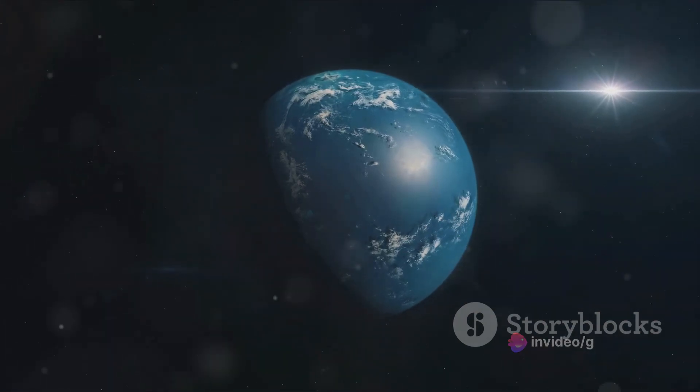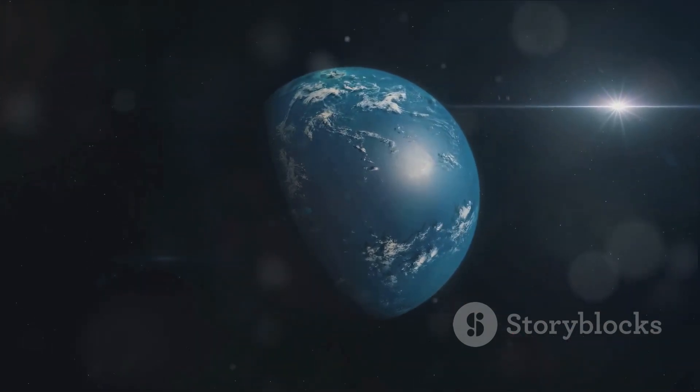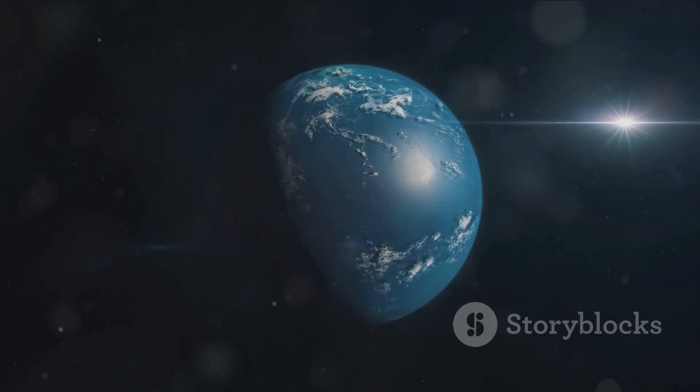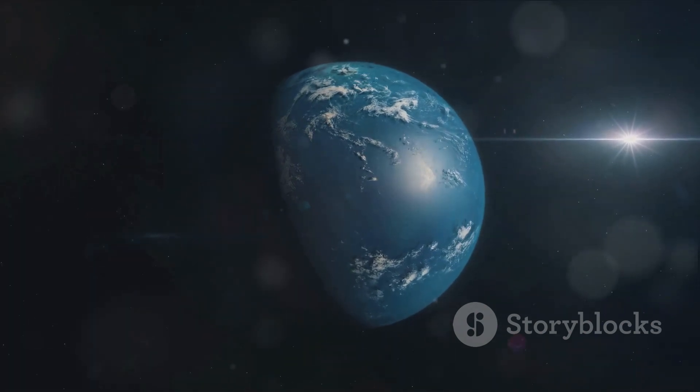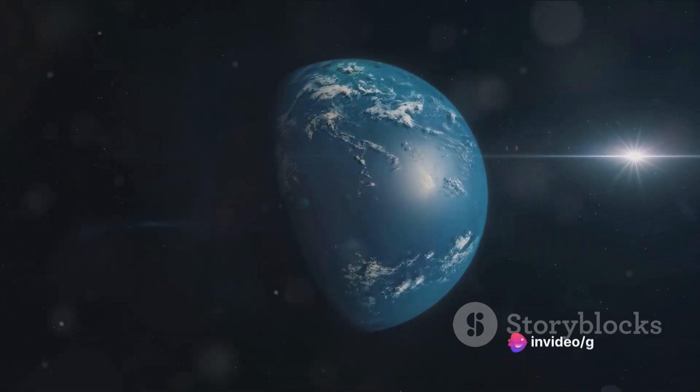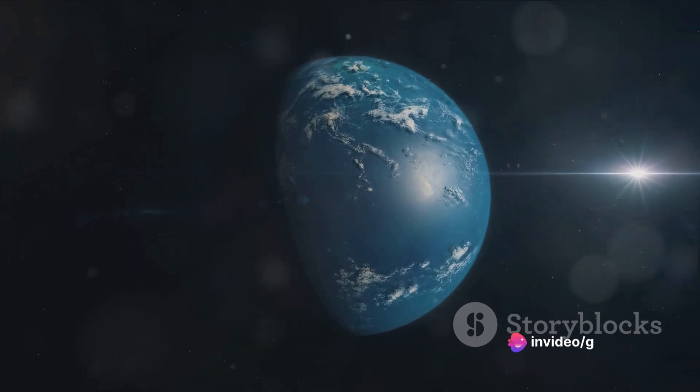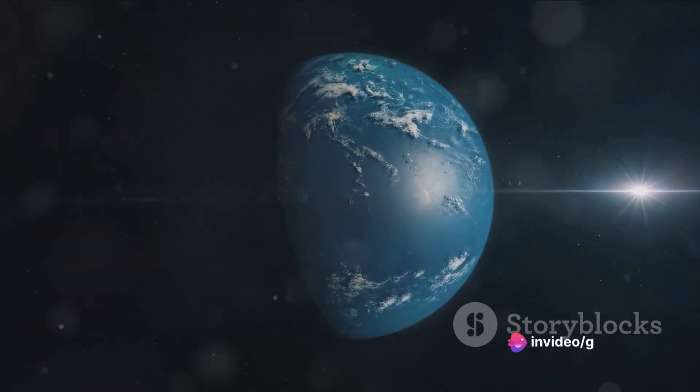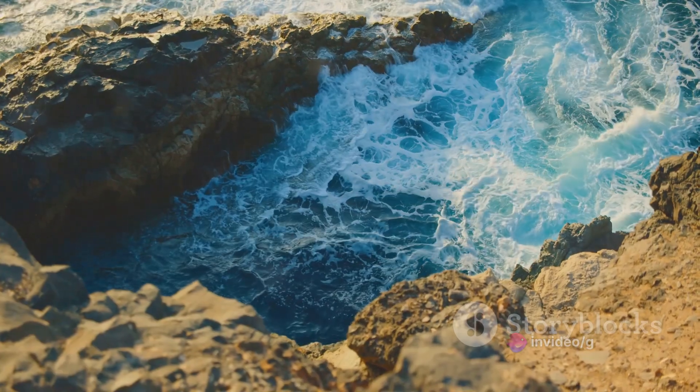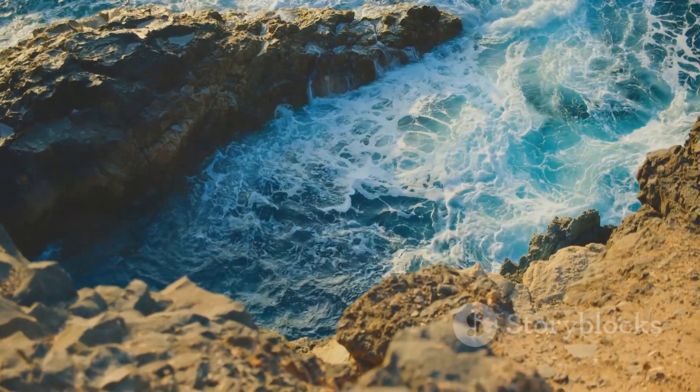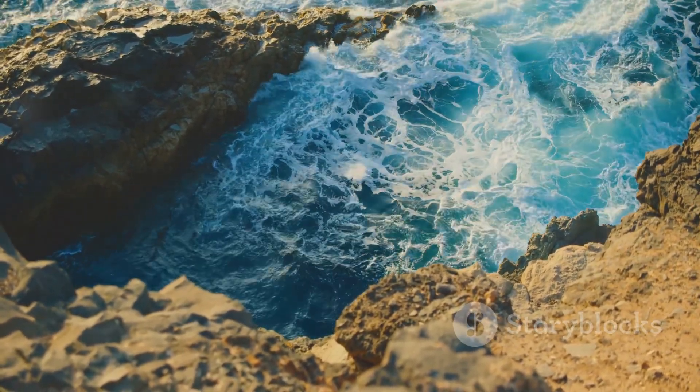But it wasn't just the presence of water that made Earth special. Our planet resides in what scientists call the Goldilocks zone, a distance from the sun that is not too hot, not too cold, but just right for liquid water to exist. This perfect positioning allowed our oceans to flourish, providing a cradle for life to take root.